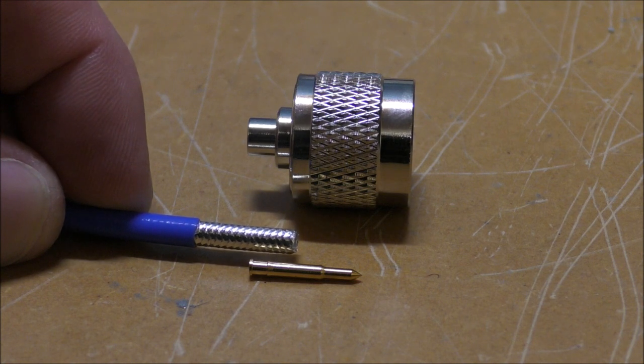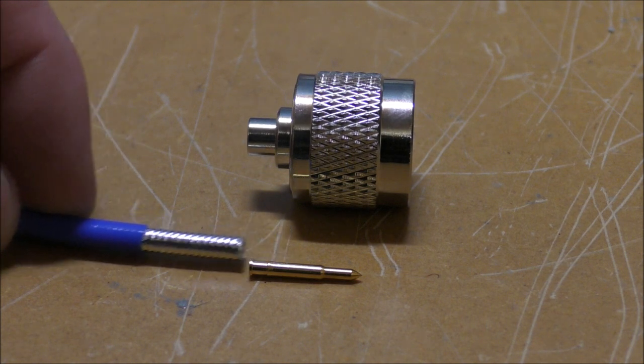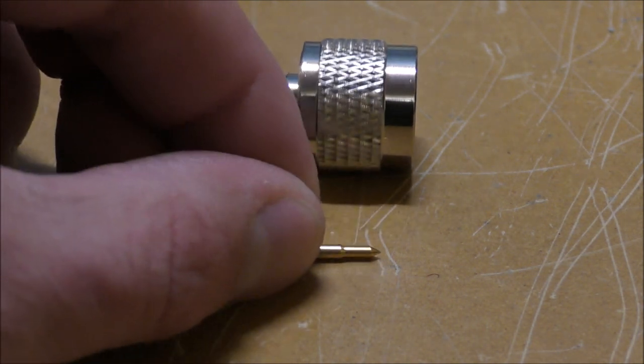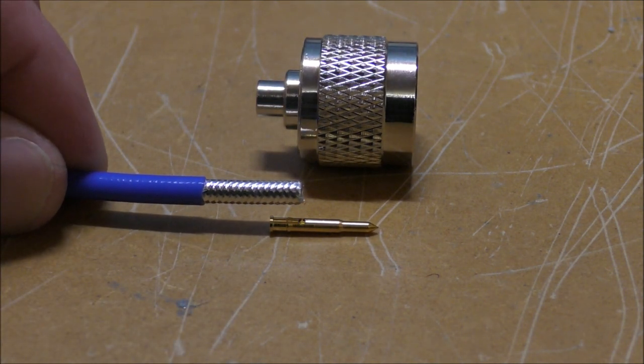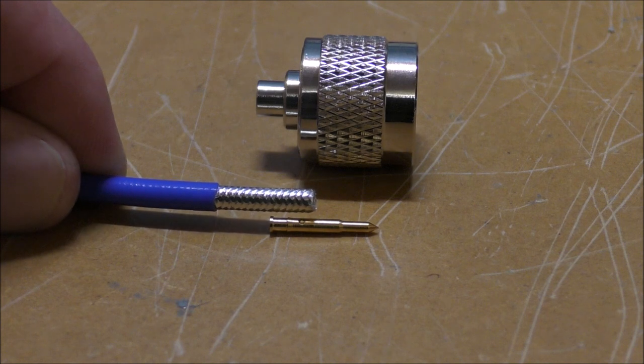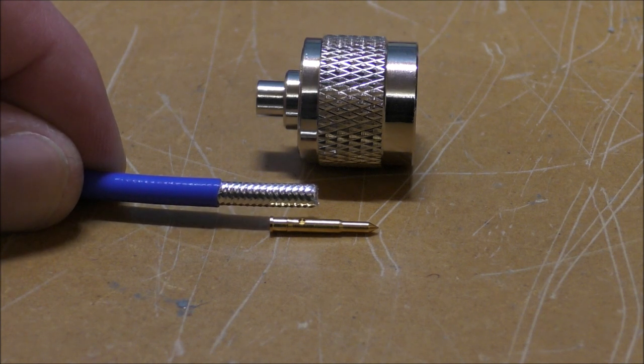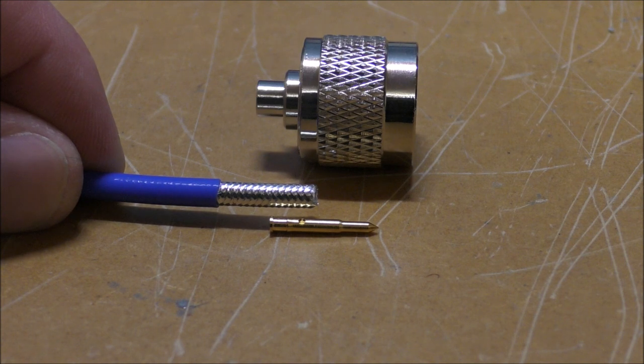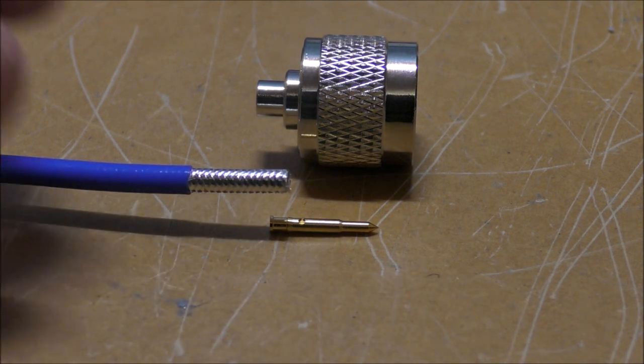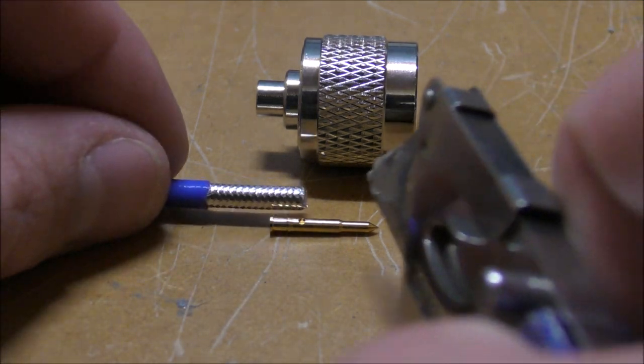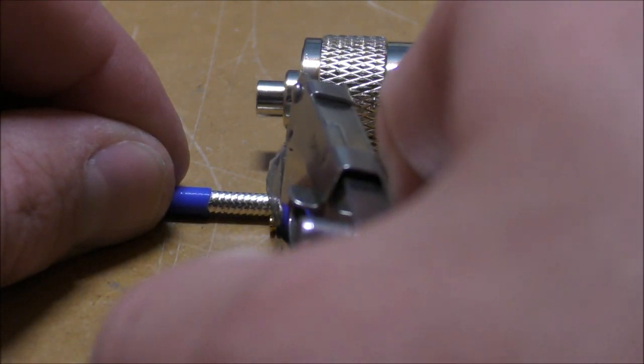We can see there that our pin roughly is going to sit around about there, and we can check to see we know that there's going to be enough coming out the end of the plug and enough going into our center pin. So what we want to do now is just score a mark where we're going to make our cut.